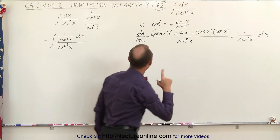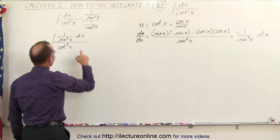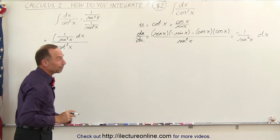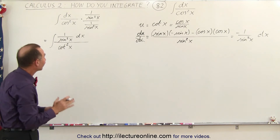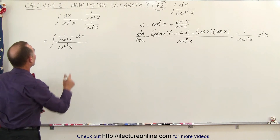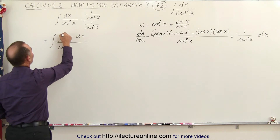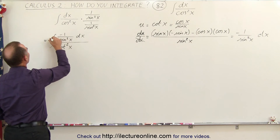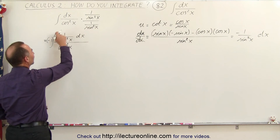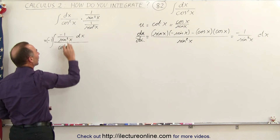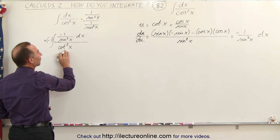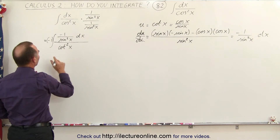Moving the dx over to the other side, notice that looks almost exactly like what we have over here. The only thing we're missing is a negative sign. So we make this a negative and put a negative in the front, and now we have the exact differential du in the numerator and u squared in the denominator.